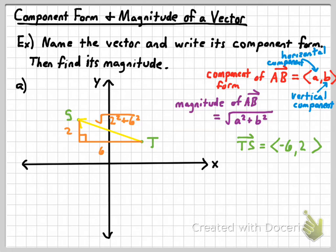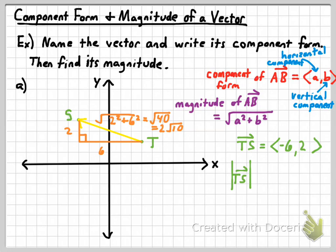For this vector then, let's simplify: the square root of four plus thirty-six is the square root of forty, or two square root of ten — that's the magnitude for vector TS. When writing the magnitude of a vector, you can use the word 'magnitude' or write the name of the vector in absolute value symbols. Absolute values represent distances, and magnitude is a distance, so they share the same symbol. The magnitude of vector TS equals two square root of ten.